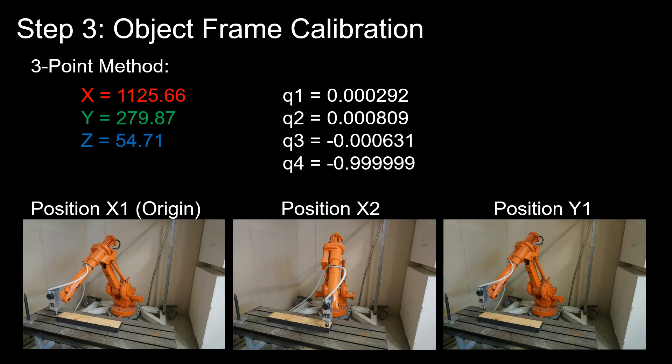The third step in the calibration is to define the object frame. The object frame is relative to the user frame. So here you see we have placed an object on the machining table.